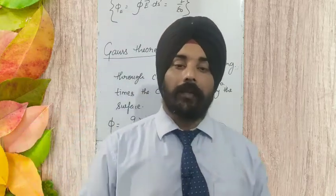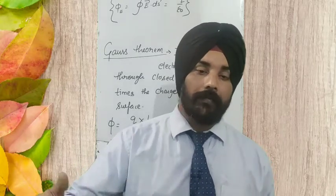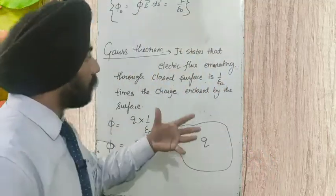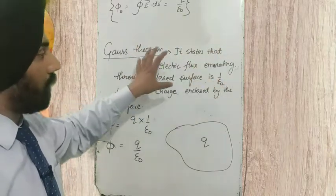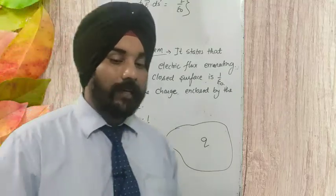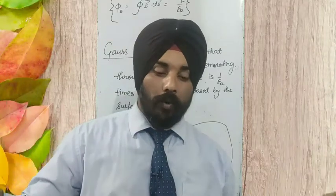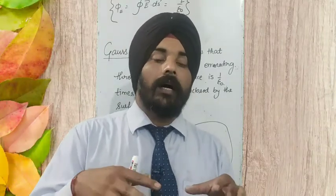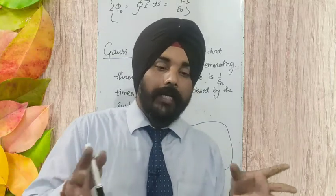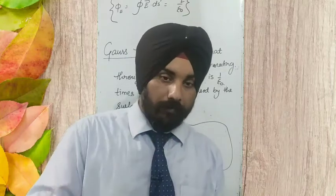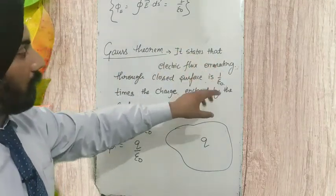Electric flux will not come out from the surface until it is having a charge in it. We will discuss about the different cases of the enclosed surface here. First you have to understand what the Gauss theorem is all about. It is telling that if a charge is kept in a closed surface — like a room in which you are living — how much flux will come out from that room depends upon the charge enclosed by that room.